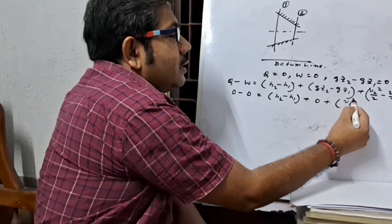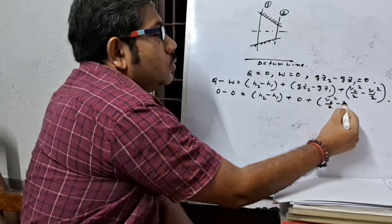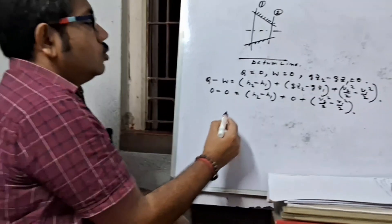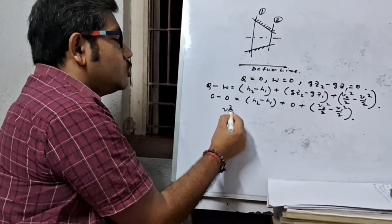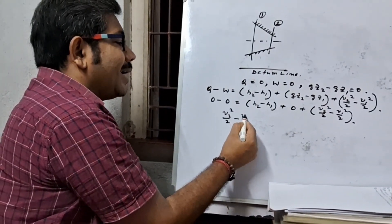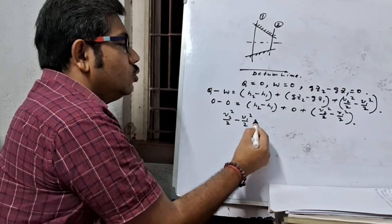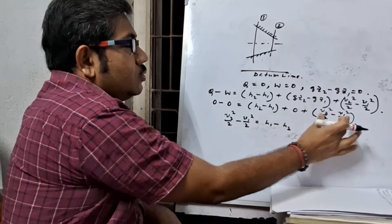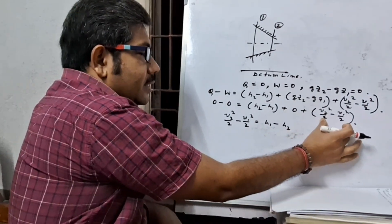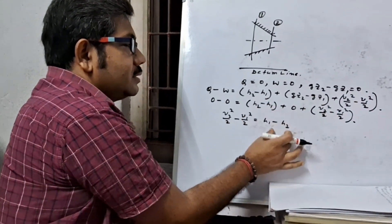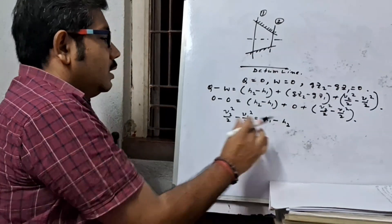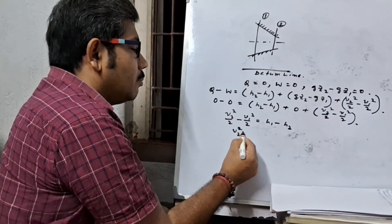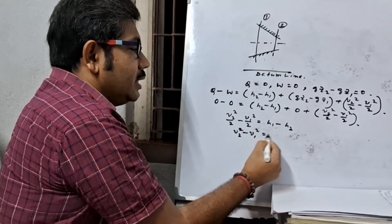So v2 squared by 2 minus v1 squared by 2 equals h1 minus h2. Now, v2 squared by 2 minus v1 squared by 2.